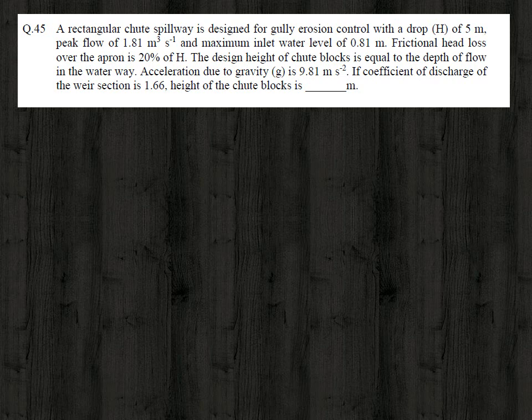If the coefficient of discharge of the weir section is 1.66, the height of the chute block is dash meter. We start with the hydraulic design using the weir formula: Qp = C × L × H raised to 3/2, where Qp is the peak discharge, C is the coefficient of discharge, L is the weir length, and H is the head of flow.